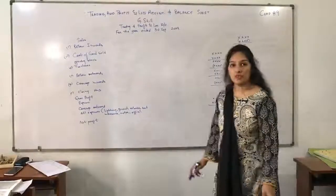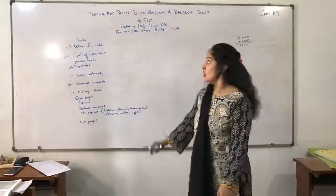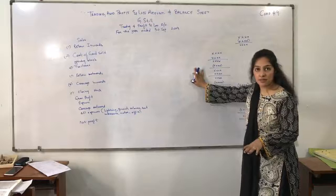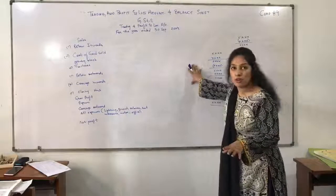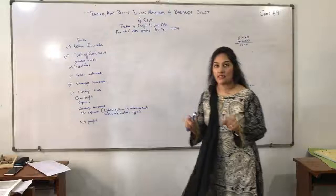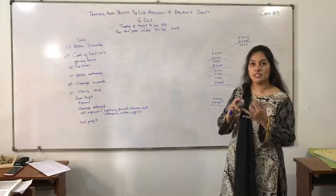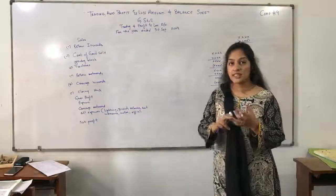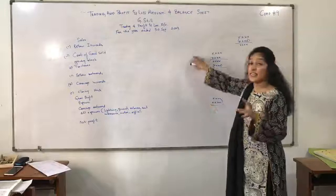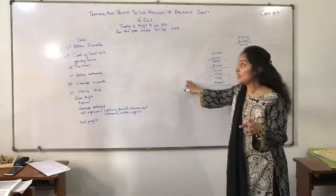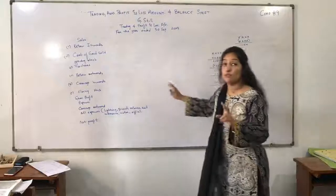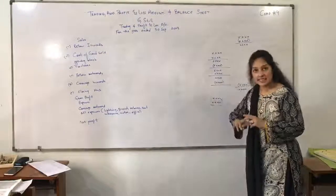Continuing from the previous video, I am now showing you a standard pattern of a trading and profit and loss account in which I have included all four titles: Return Inwards, Return Outwards, Carriage Inwards, and Carriage Outwards. These four titles will be included in the trading and profit and loss account but under different headings.